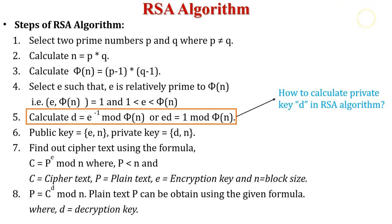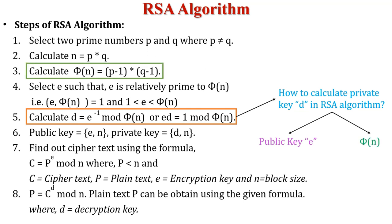Whenever you want to calculate value d, you need two values. The first one is public key e, and the second value is the totient function phi of n. Phi of n is calculated in the third step.